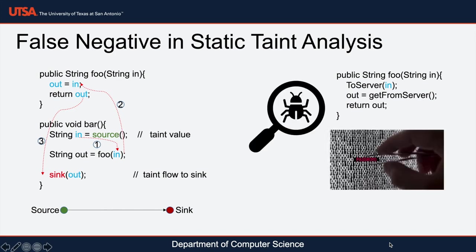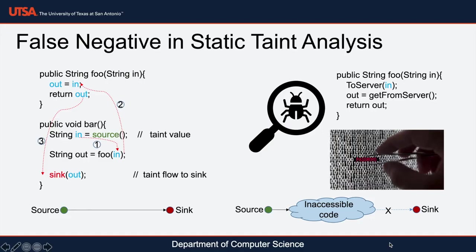Dynamic programming language features or inaccessible code are some of the major reasons. For example, when a taint value is sent to a remote server, we will lose the tracing of that data. Later, when the data is sent back to the application, we won't be able to detect the data flow.